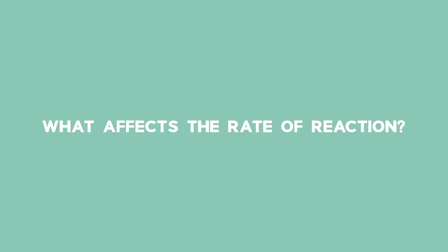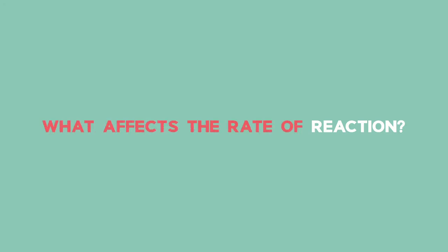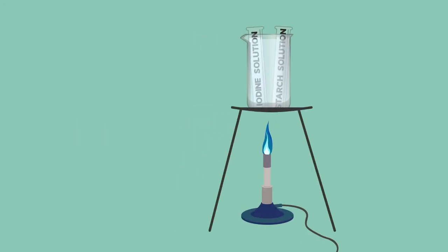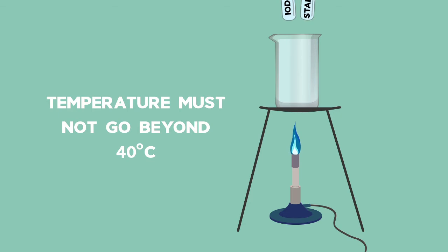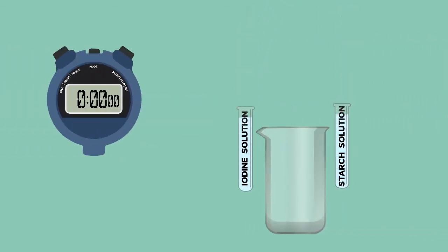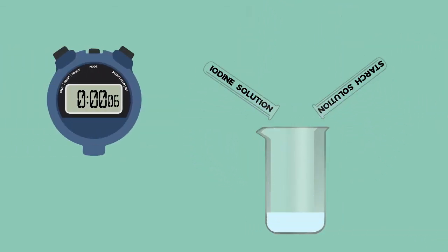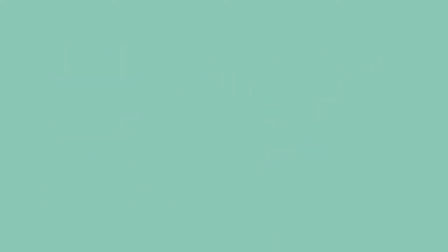After this, we will be looking at what affects the rate of reaction. To look at rate of reaction, simulations and experiments will be used to illustrate these factors of concentration, surface area, temperature, and catalysts.